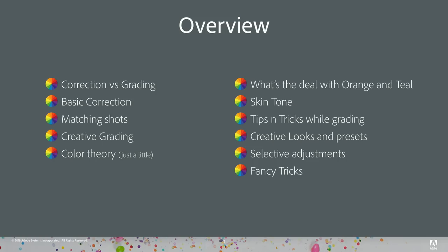Here's a brief overview of what we're going to be talking about today: correction versus grading — what's the difference and why do we have these two terms; basic correction workflow, how to get your exposure, white balance, and contrast looking good; shot matching, including the brand new Adobe Sensei powered shot matching technology we just released; creative grading, giving your footage a more creative look; a little bit of color theory; what's the deal with orange and teal; tips and tricks while grading; creative looks and presets; and some more advanced stuff — selective adjustments, which is when you're affecting just part of the image — and some fancy tricks if we have time.